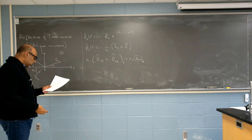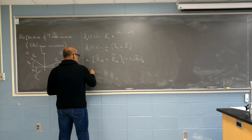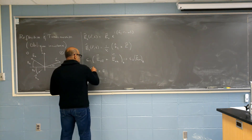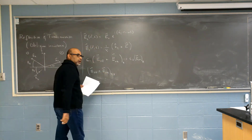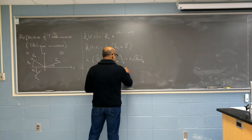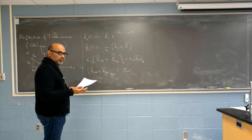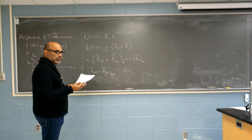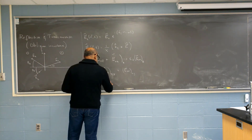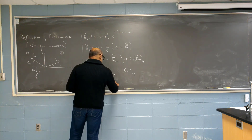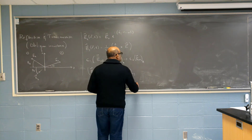The parallel component of the electric field is continuous. So the normal component of the D field is continuous. The parallel components of E zero I plus E zero R — the parallel components are X and Y — equals E zero T, the X or Y component. The normal component of B is continuous because divergence of B is zero, and so you get B zero I plus B zero R, Z component, equals B zero transmitted, incident Z.